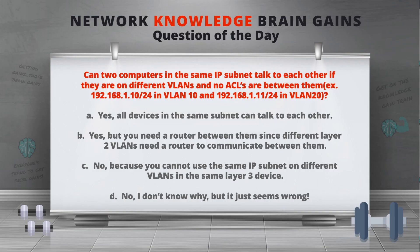So for the first Network Knowledge Brain Gains question of the day: can two computers in the same IP subnet talk to each other if they're on different VLANs and no ACLs are between them? For example, you have 192.168.1.10 /24 in VLAN 10 and 192.168.1.11 /24 in VLAN 20. Take a look at the multiple choice answers and put whatever you believe is the right answer in the comment section below. I'll be picking out a winner to get some JBC swag stickers.